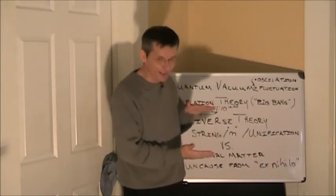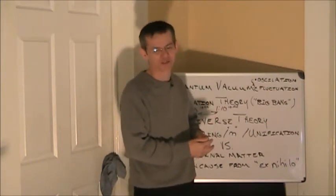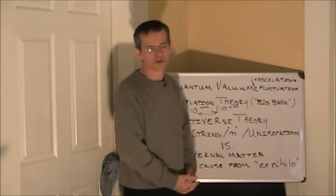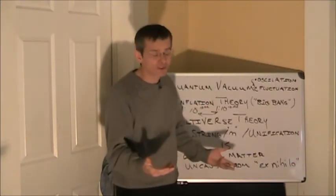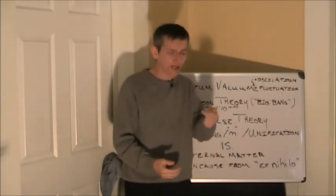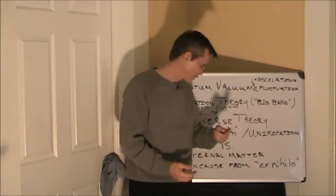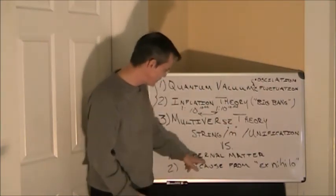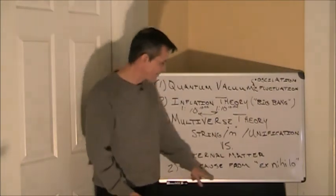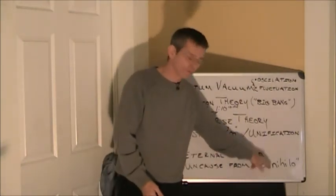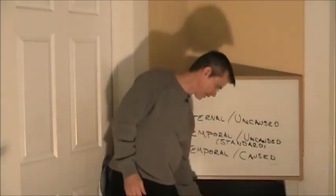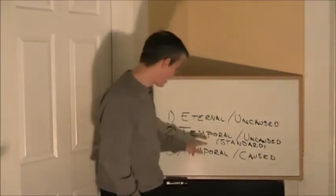I think Occam's Razor might come into play there because you're creating more complexity of the problem in order to find a solution. Even doing so, again, you haven't escaped eternal uncaused or temporal uncaused. You still have to go back and answer that. You still have an eternal matter or eternal something or you have uncaused from nothing.